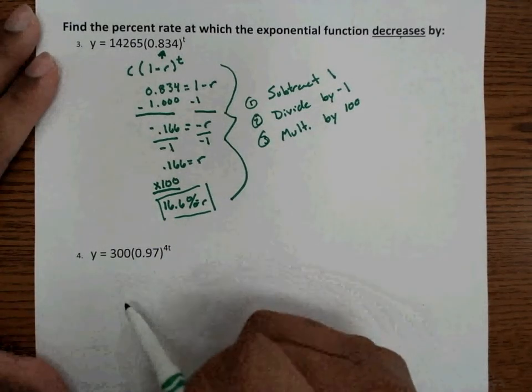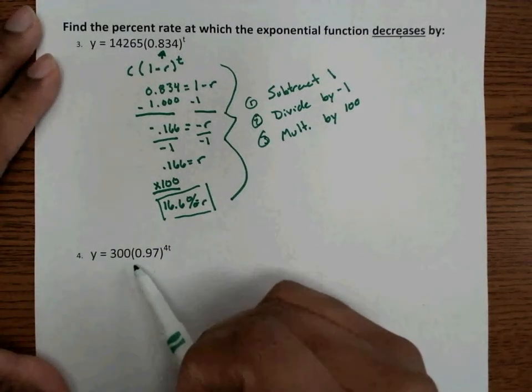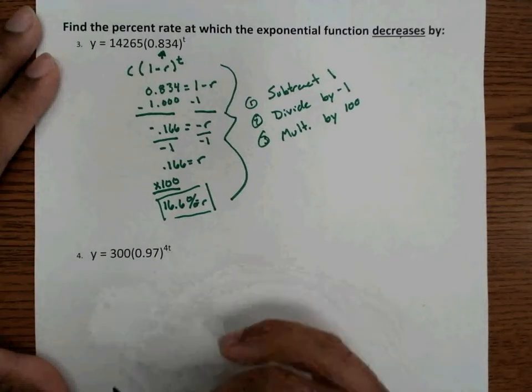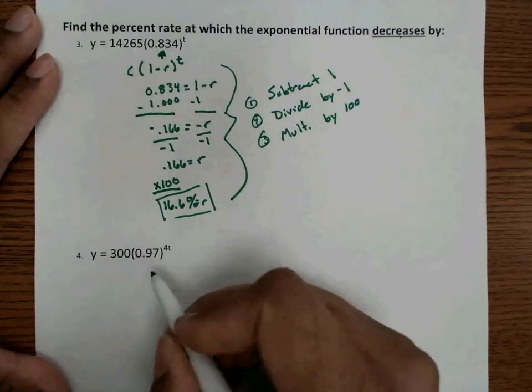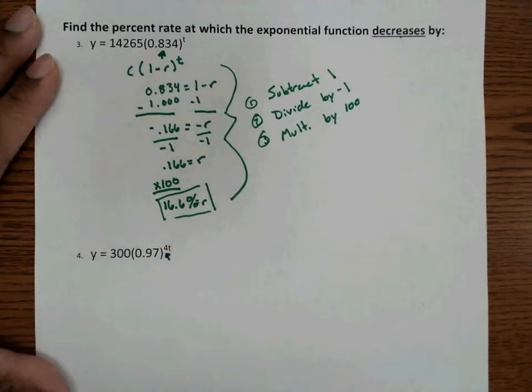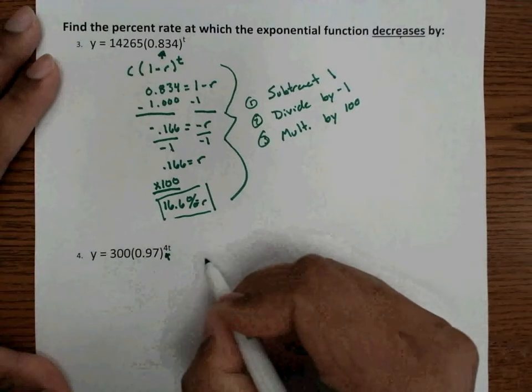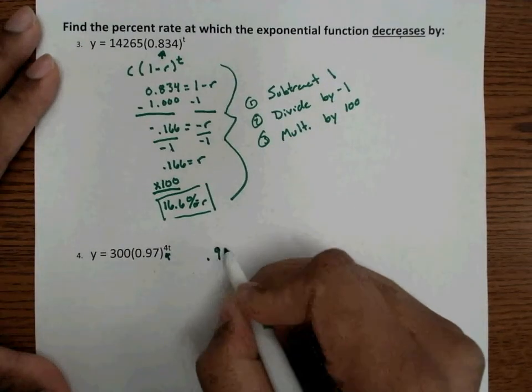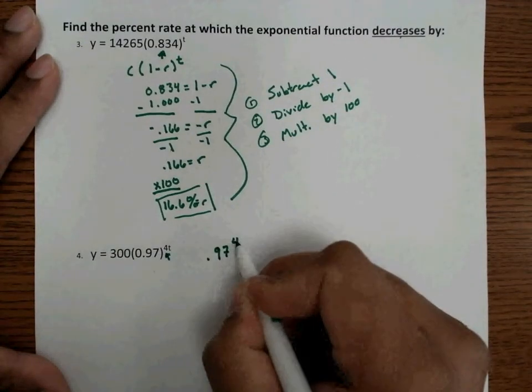So in this one, we have y equals 300 times 0.97 raised to the 4t. This one again is a little different, because if you notice, we have a number in front of the t. So what do we have to do with that? Think about it.